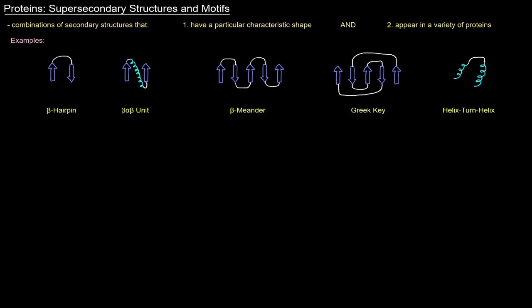We can also have two parallel beta pleated sheets with an alpha helix between them — that's specifically a beta-alpha-beta unit. And then there's the beta meander: a series of anti-parallel beta pleated sheets — five drawn here — connected sequentially start to finish all the way through to the fifth one.